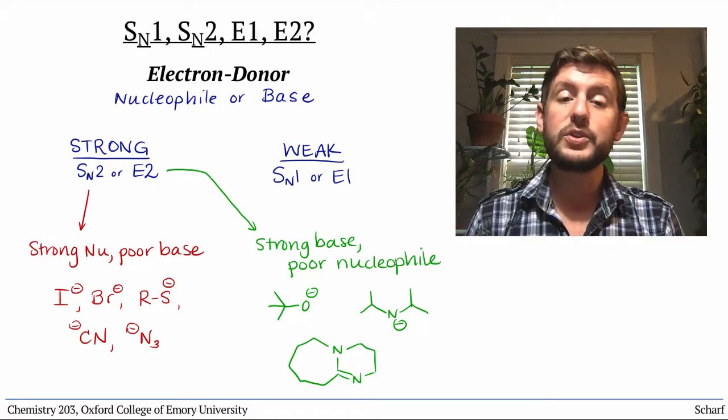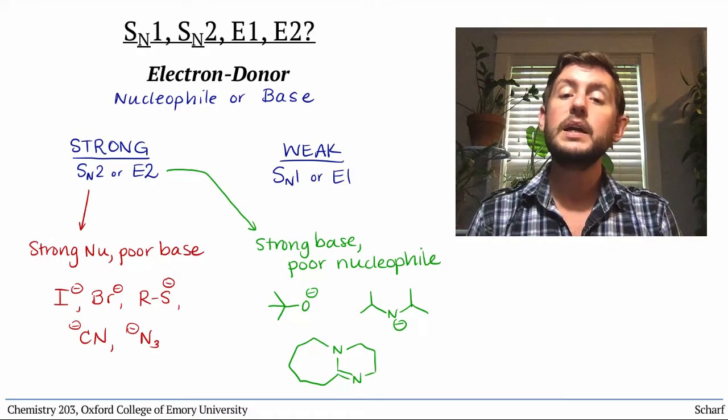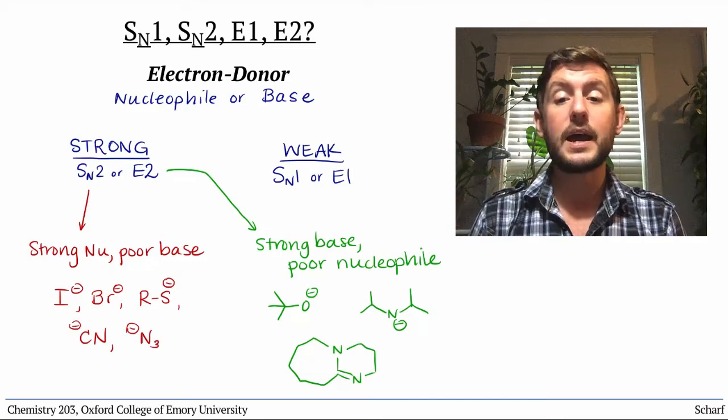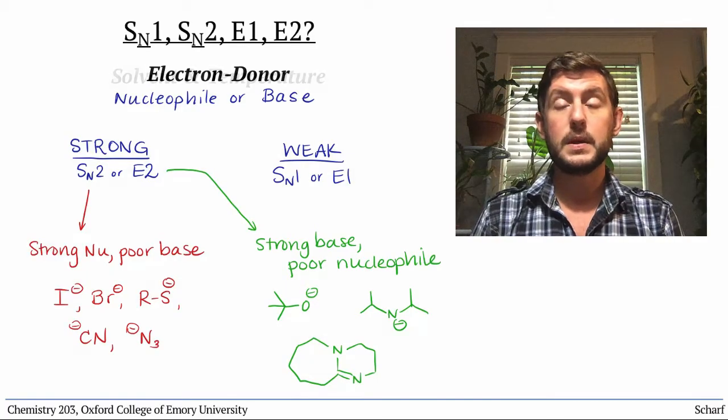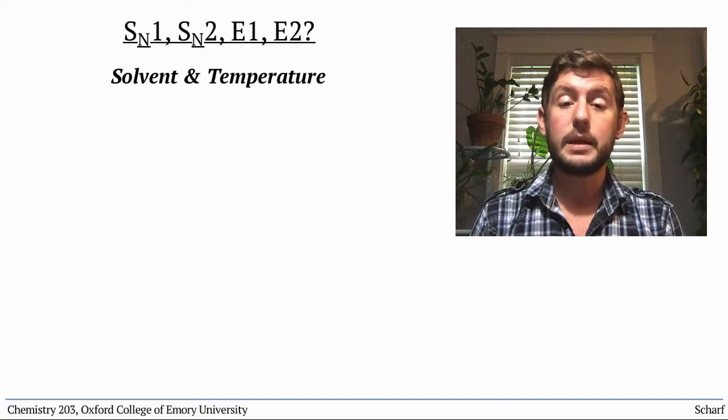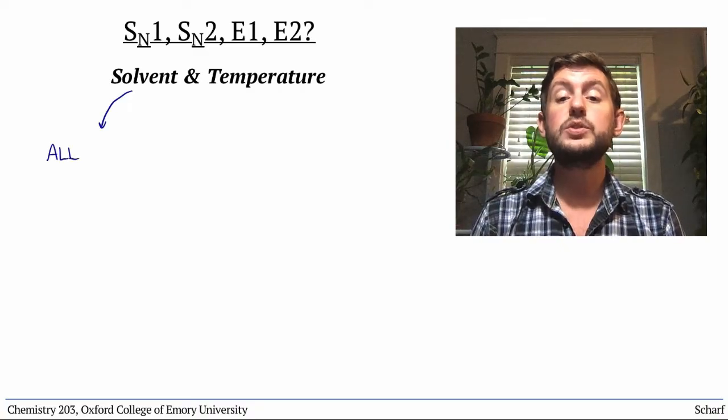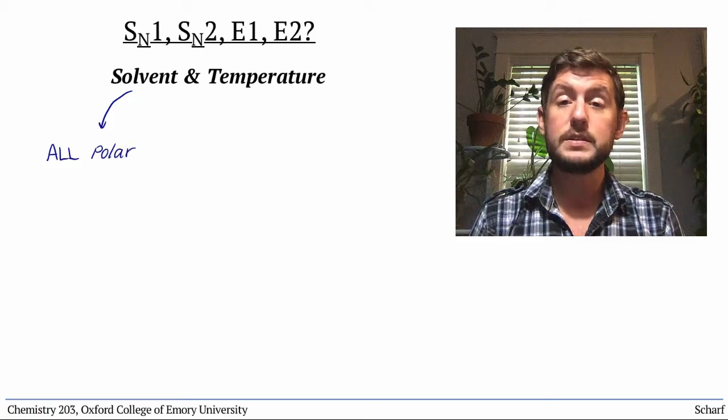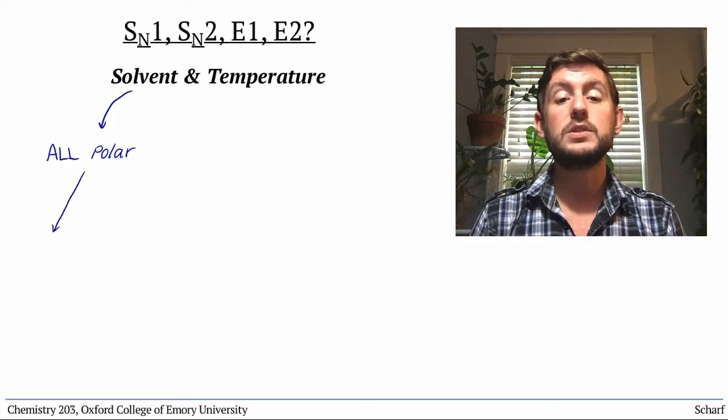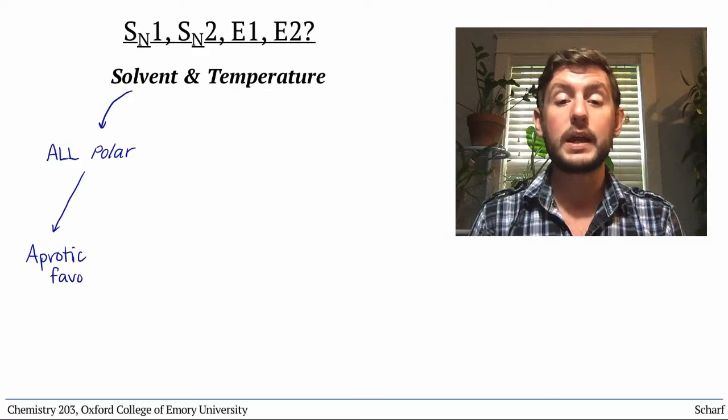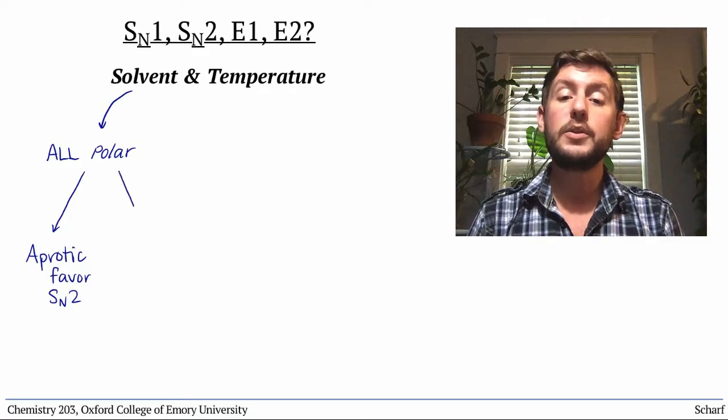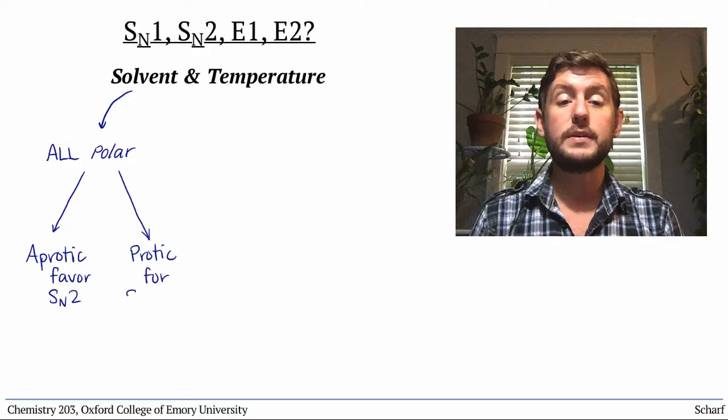But two additional factors are occasionally important if the situation is ambiguous after considering the first two: solvent and temperature. While all these reactions do best in polar solvents, SN2 reactions are favored in aprotic solvents, while the other reactions tend to prefer protic solvents.